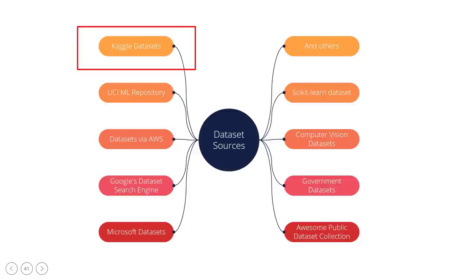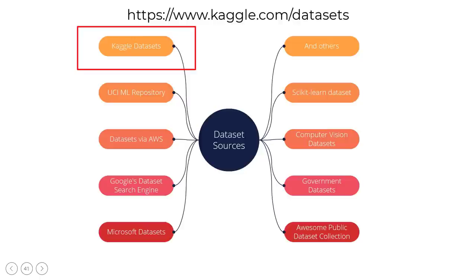Kaggle: data scientists and machine learners will find that Kaggle is one of the top sources for supplying datasets. It makes it simple for users to locate and download datasets, as well as post new ones. It also gives you the chance to collaborate with other machine learning experts to find solutions to challenging data science projects. Kaggle offers a variety of high-quality datasets in many formats. The link is: https://www.kaggle.com/datasets.